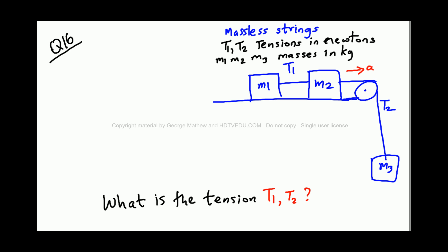T1 and T2 are tensions within the strings. It is accelerating to the right. So how do we determine tension T1 and T2?